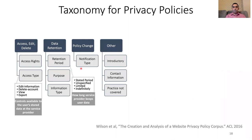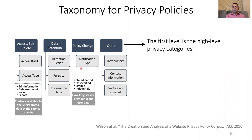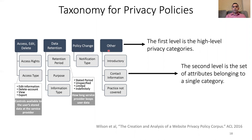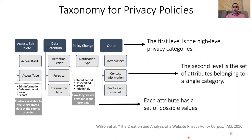Our analysis framework is based on tagging the privacy policy text according to a privacy taxonomy from Wilson et al. from ACL 2016. This taxonomy is multi-level: the first level covers high-level privacy categories such as first-party collection, policy change, and data retention. The second level is the set of attributes belonging to a single category — for example, the data retention category has attributes including retention period, purpose, and information type, with values such as stated, unspecified, limited, or indefinite.